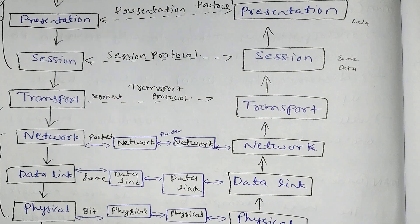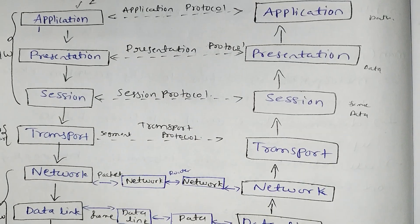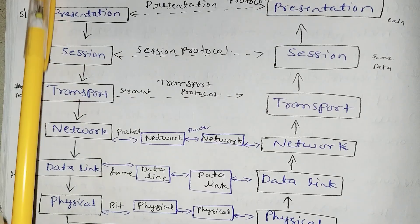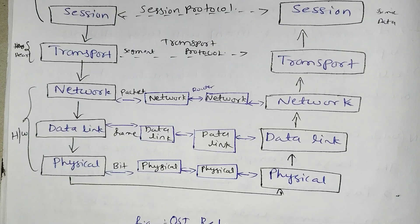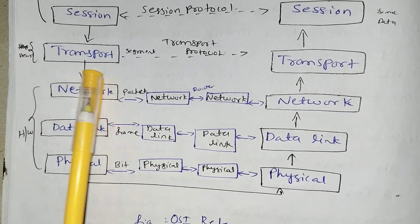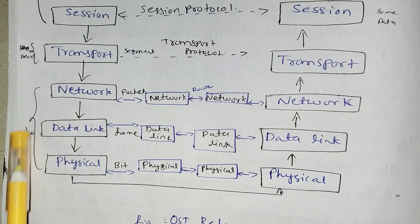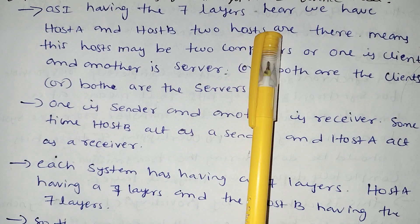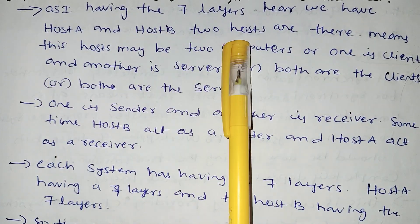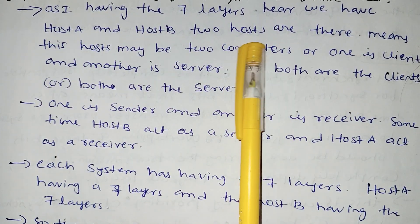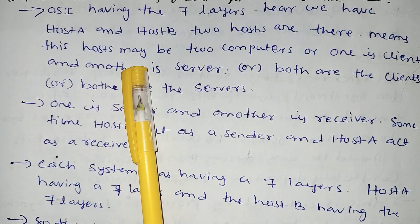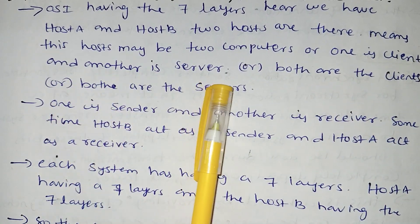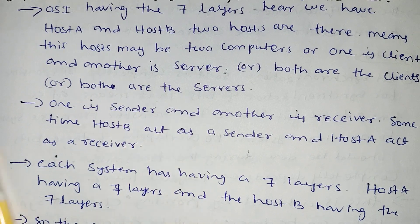The layers are completely different. The application and presentation interface is software. The transport layer is also software. The physical layer, data link layer, and network layer are hardware. OSI has seven layers. Here we have Host A and Host B — two hosts that may be two computers, or one is a client and another is a server.